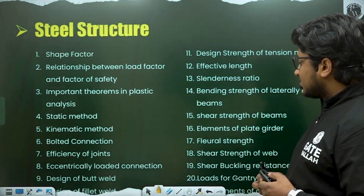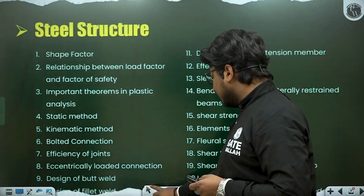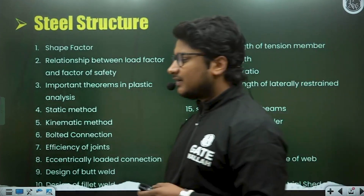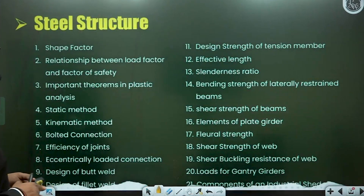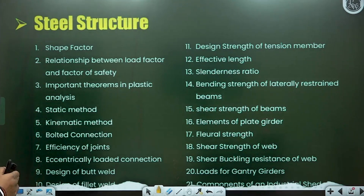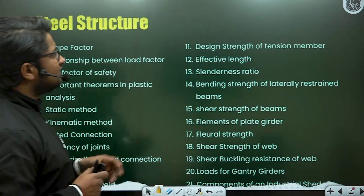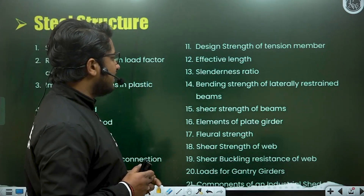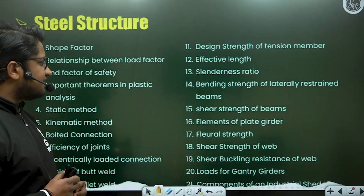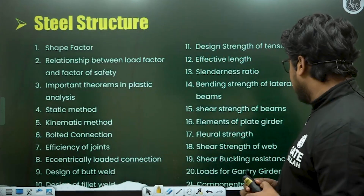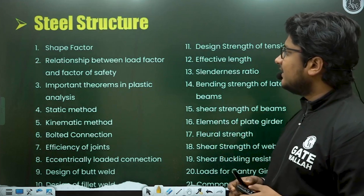Coming to Steel Structures — many of you are confused whether to revise this or not. Important topics are: shape factor, relationship between load factor and factor of safety, important theorems in plastic analysis, static and kinematic methods, bolted connections, efficiency of joints, eccentrically loaded connections, design of butt weld and fillet weld, design strength of tension members, effective length, slenderness ratio, bending strength of laterally restrained beams, plate girder elements, shear strength of web, shear buckling resistance, and load for gantry girders.